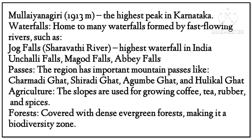Waterfalls: home to many waterfalls formed by fast-flowing rivers — Jog Falls on the Sharavati River is the highest waterfall in India. Apart from this, Unchalli Falls, Magod Falls, and Abbey Falls. Passes: the region has important mountain passes like Charmudi Ghat, Shiradi Ghat, Agumbe Ghat, and Hulikal Ghat. Agriculture: the slopes are used for growing coffee, tea, rubber, and spices. Forests: covered with dense evergreen forests, making it a biodiversity zone.